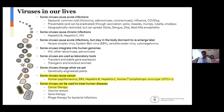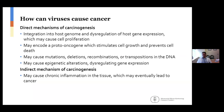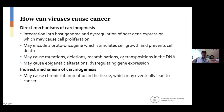So how can viruses cause cancer? There are several different mechanisms that have been identified. Some of those mechanisms are direct. As mentioned, some viruses through the course of infection can integrate into the host genome and dysregulate gene expression, which may cause cell proliferation. Some viruses may encode an oncogene, which can stimulate cell growth and prevent cell death. Other viruses can cause mutations, deletions, recombinations, or other types of transpositions in the DNA, which can modify the DNA structure and lead to cancer. Some viruses don't cause mutations but may cause alterations at the epigenetic level and dysregulate gene expression, allowing cancer to form. Some viruses cause cancer indirectly — chronic infections such as hepatitis B and C may cause chronic inflammation in the tissue, and this may eventually lead to cancer.